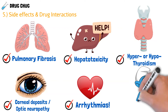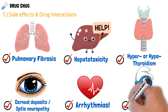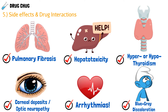The last side effect is something very unique called blue-gray discoloration — some people call it the Smurf side effect. Basically the patient turns blue over the whole body. You see it in the face and the arms, and it's something very unique to amiodarone to know and watch out for.